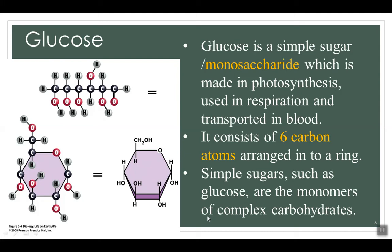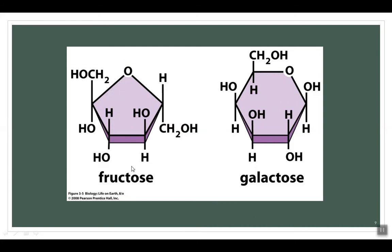Glucose is the simplest form of carbohydrate, made in photosynthesis and used in respiration as a substrate. It has six carbon atoms and the atoms form a ring structure. Glucose is found in many sweet-tasting foods such as fruits and vegetables. Fructose or fruit sugar is another monosaccharide, naturally found in fruits, honey and many root vegetables, and also sourced from sugar cane, sugar beets and corn. Fructose has the sweetest taste of all.